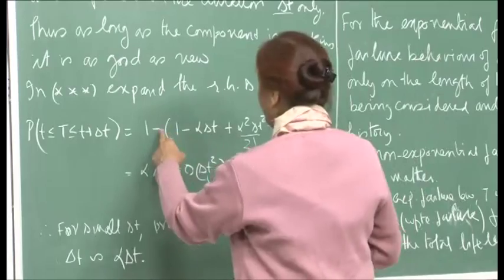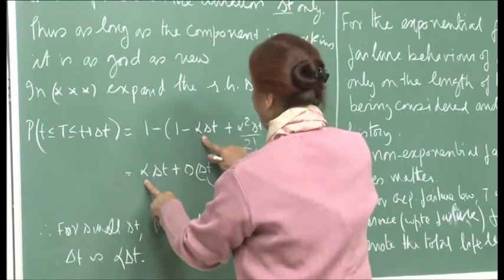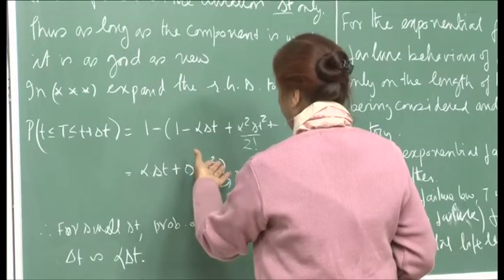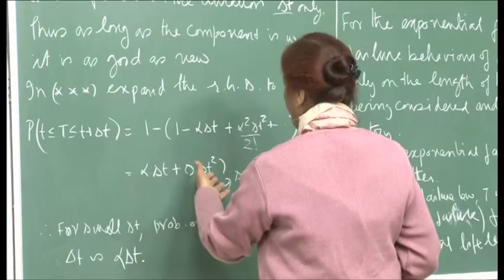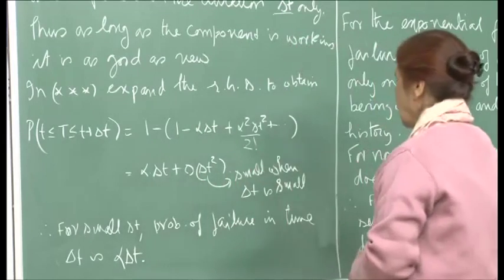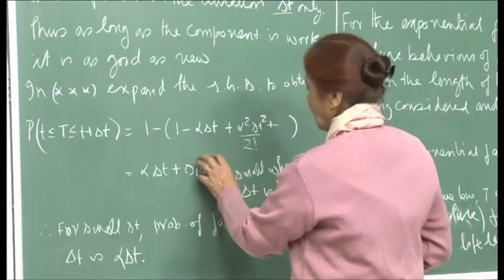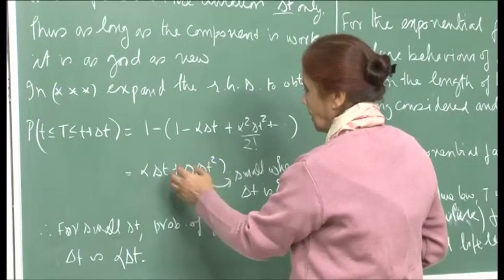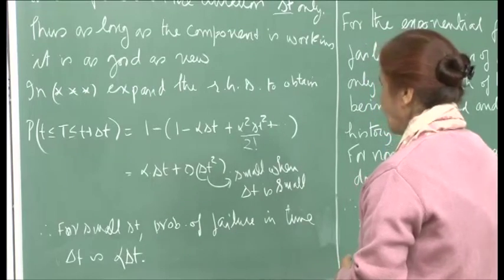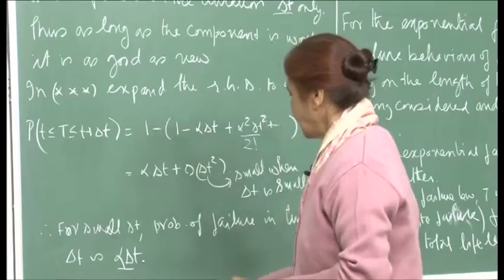When delta T is small, we can ignore the higher-order terms. Therefore, for small delta T, the probability of failure in time delta T is approximately proportional to α delta T.